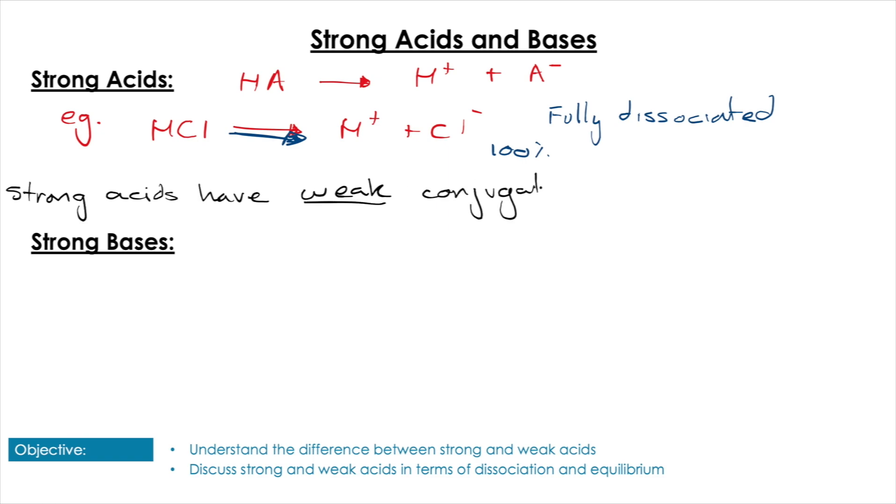They all have weak conjugate bases. So what do I mean by that? Well, let's have a look at Cl-. Cl- doesn't want to react with H+. It's already dissociated from a strong acid. That means that these are not going to participate in acid base reactions, and once they've dissociated, the Cl- isn't going to react with H+ or OH-. That's what we mean when we say a weak conjugate base.